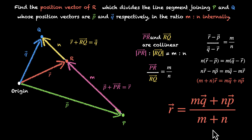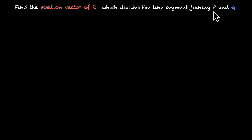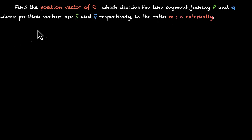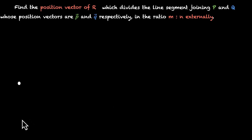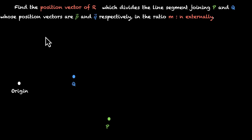We can do the same for external division. Let's find the position vector of r which divides the line segment joining p and q, whose position vectors are p vector and q vector, in the ratio m is to n externally. This time r sits not between p and q but outside — so r is beyond q on the extended line, while p, q and r are still collinear.